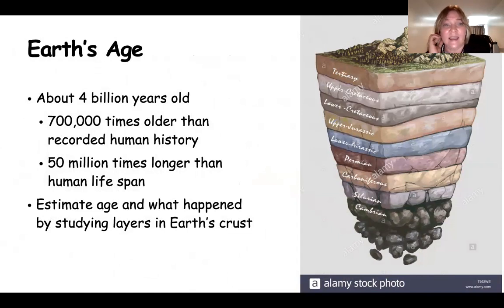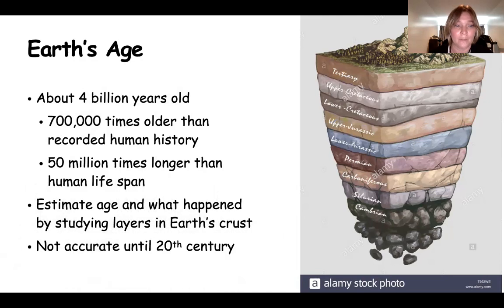We can estimate the age of the Earth and what happened by studying the layers in the Earth's crust. You can see here all of the different eons - the tertiary, the upper Cretaceous, lower Cretaceous, the Jurassic, of course we know that from Jurassic Park where the dinosaurs roamed around. The further down we go, the further back in time we go, but estimating Earth's age was not accurate until the 20th century.